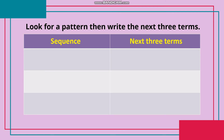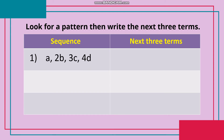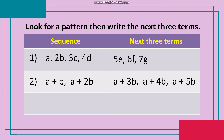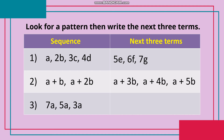Look for a pattern then write the next three terms. Sequence 1: A, 2B, 3C, 4D — next three terms: 5E, 6F, 7G. Number 2: A+B, A+2B — next three terms: A+3B, A+4B, A+5B. Number 3: 7A, 5A, 3A — next three terms: A, negative A, negative 3A.